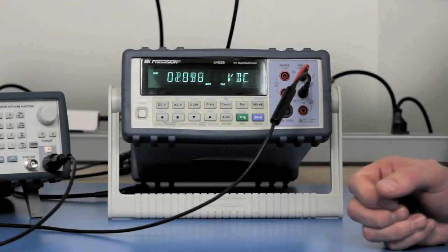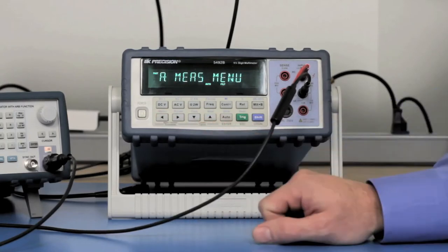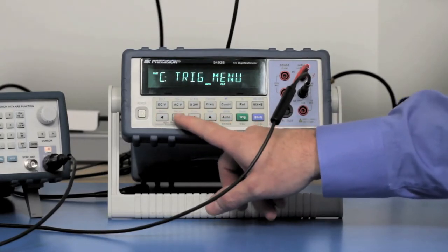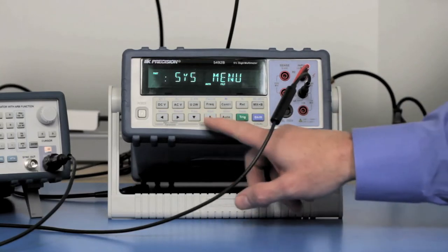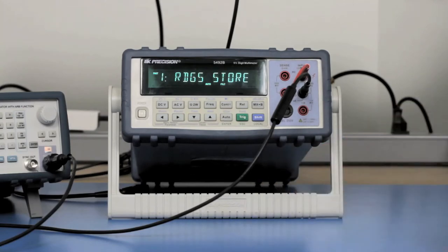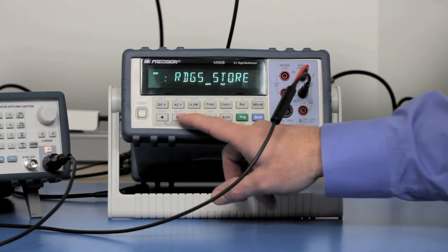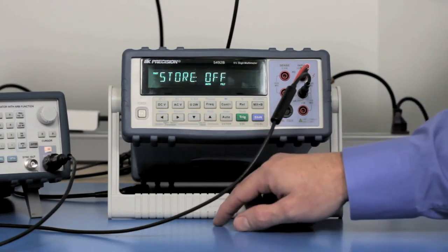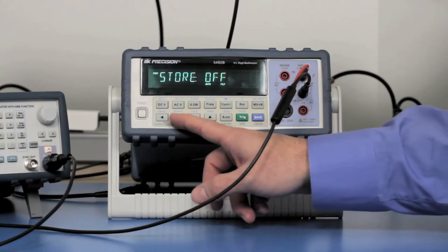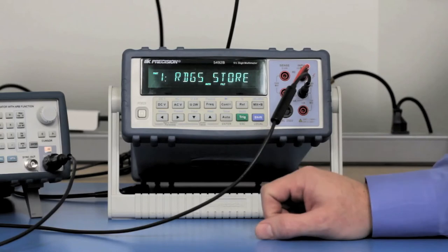To set up the 5492B to use the buffer storage operation, first we're going to press the shift menu button. Then we're going to cycle through to the system menu, and this shows the readings stored. So here we're going to tell it that yes, we want to turn that on. So you press the down button, and the left or right buttons will cycle through on and off. So we turn that on and press enter, and it'll say change stored.